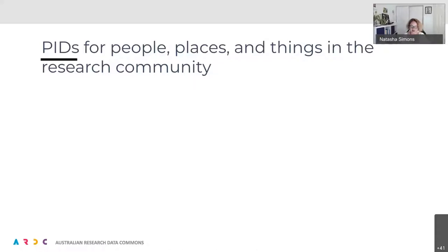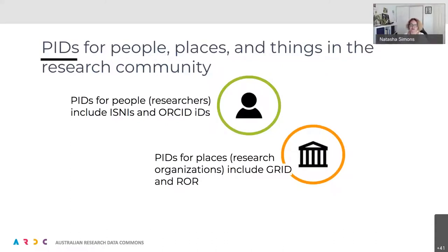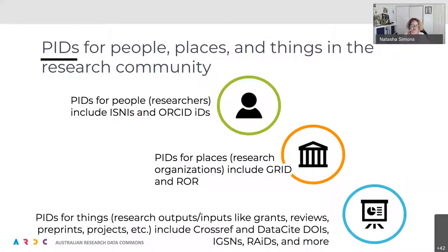There are different types of PIDs in research. We have PIDs for people — researchers and contributors — and the main one used in Australia is ORCID, though ISNIs are also an option. We also have PIDs for organisations, which are research organisations, using GRID and ROR — slightly different types of organisation registries. We also have PIDs for things: research inputs, grants, and so forth. Those are issued through Crossref and DataCite, which are registration agencies for digital object identifiers. We also have IGSNs and RAIDs and more.